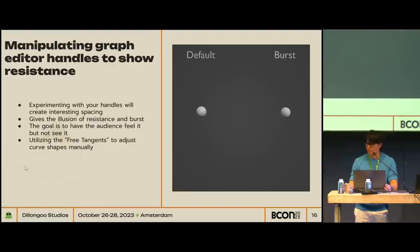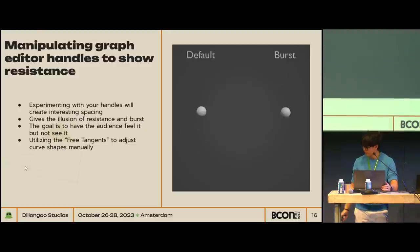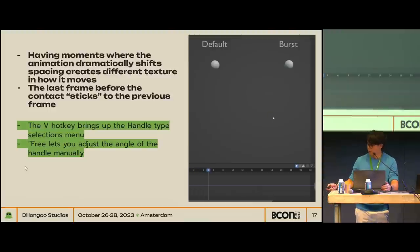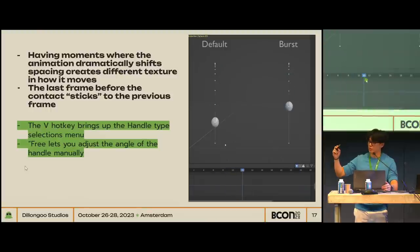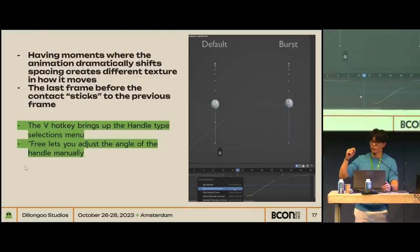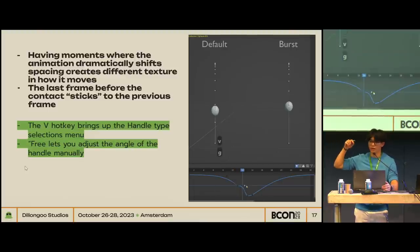My next tip is about manipulating graph editor handles to get variable spacing. The ball on the right is something I call burst spacing, and I do that with free tangents in the graph editor. The only difference between the two bouncing balls is the one frame before contact with the ground — it favors the frame before it. This is not necessarily realistic, but it's good for snappy, stylized animation where you want the impact to feel harder. The viewer's eyes will stick to that frame, then there's a big blob of missing data, and your brain interprets that as a harder motion hit.